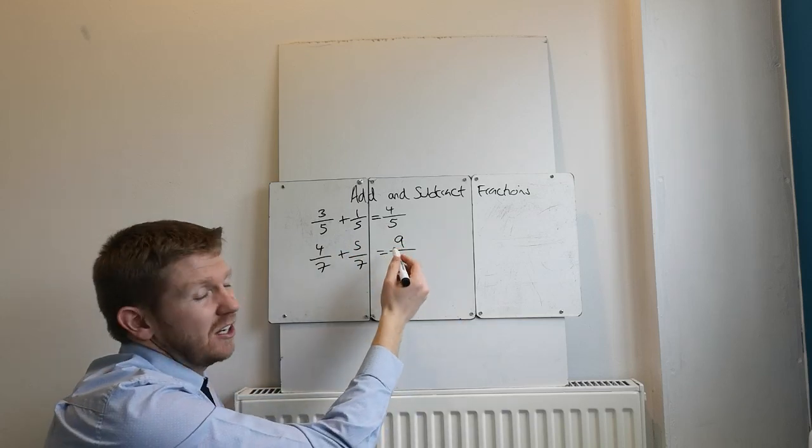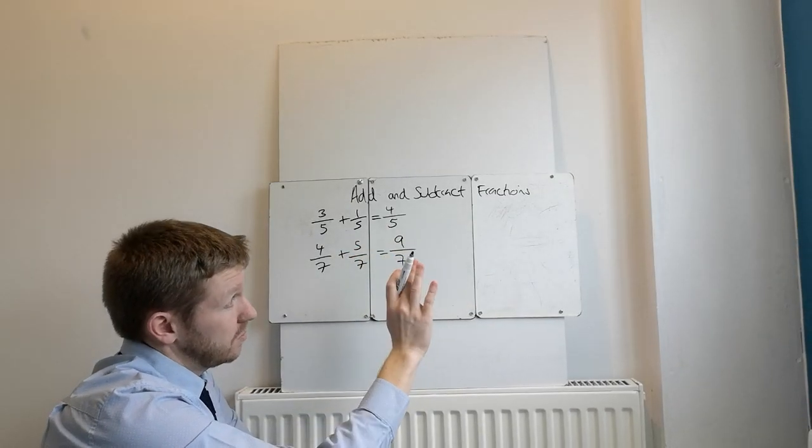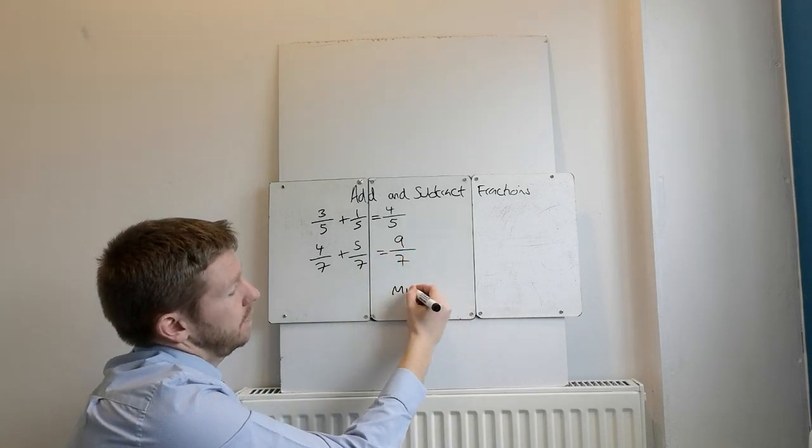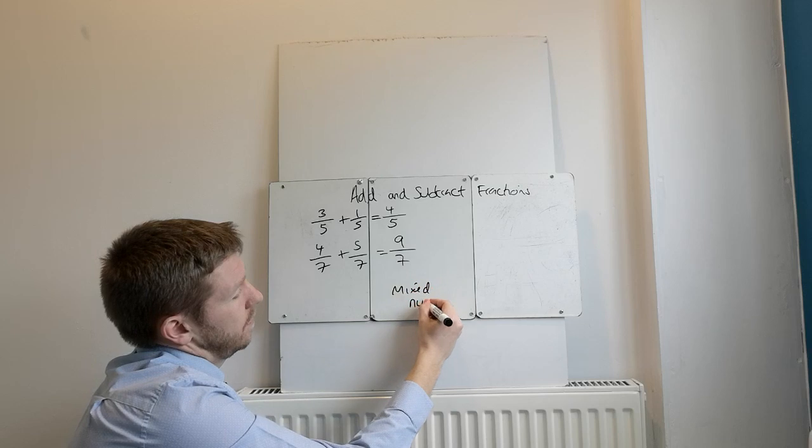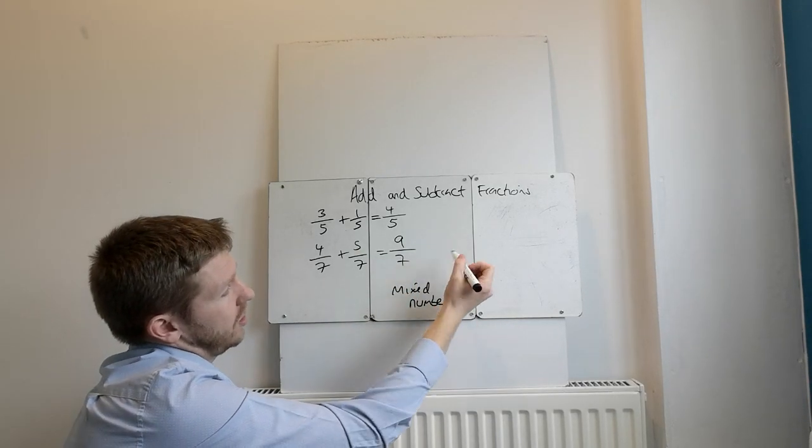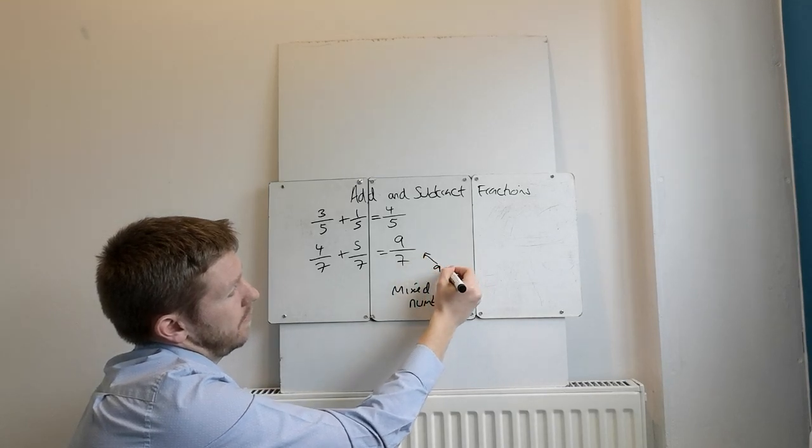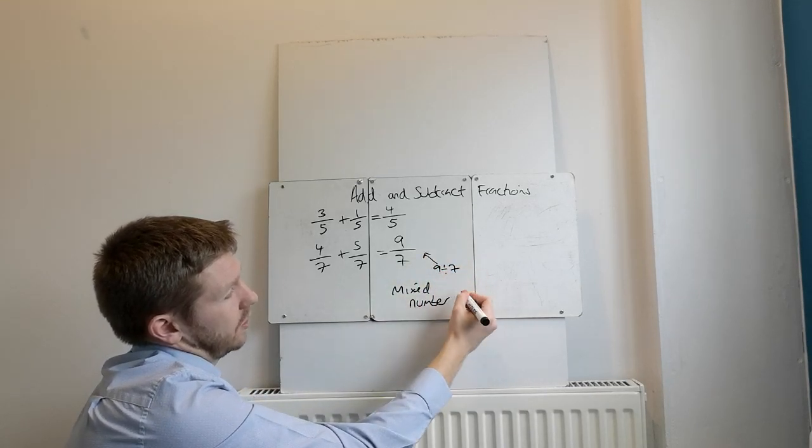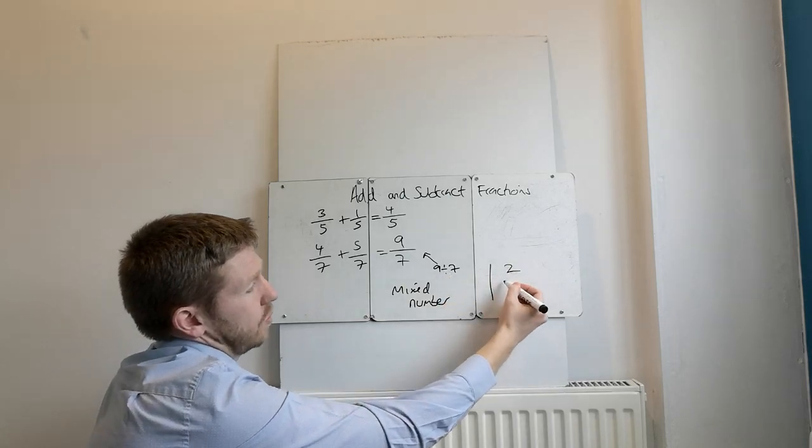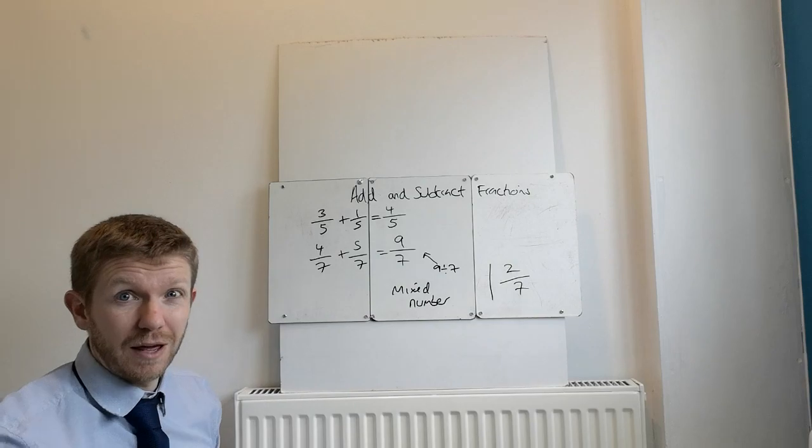Now, we don't tend to leave fractions like that. Sometimes we do, but for an answer, we'll probably change that into a mixed number. And that's where you have a whole number and a fraction. So 9 divided by 7, that's what that means. How many 7's go into 9? 1 does. Remainder 2, so 1 and 2 sevenths. Hopefully up to now it's really straightforward.